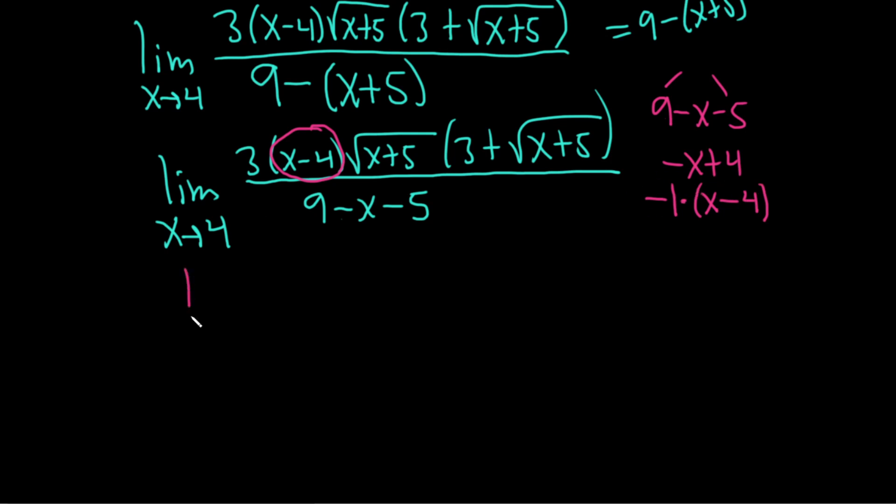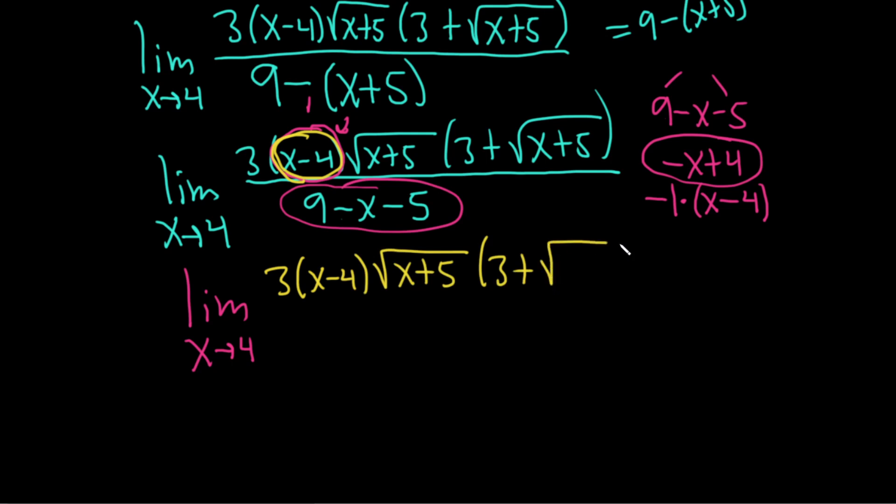And so now we can write this as the limit as x approaches 4. And the reason we did that is because when we simplify this, we get this. And we want it to be the same as this piece here in yellow so that they cancel. So what we do is we pull out a negative, and so now it will be the same. So this is 3x minus 4 square root x plus 5 parentheses 3 plus square root x plus 5 all being divided by, and on the bottom, we have minus and then x minus 4, just like that. Just go away.